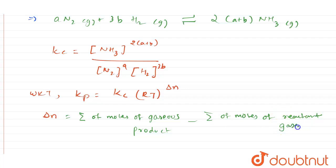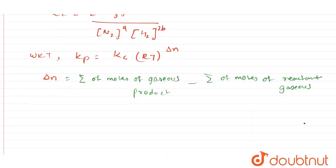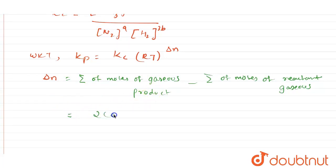Gaseous reactant. So that will be equal to, it is going to be the gaseous product is 2 into (A plus B) minus it is going to be A plus 3B.